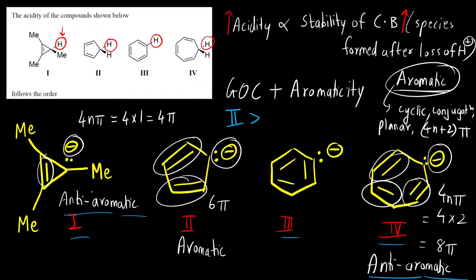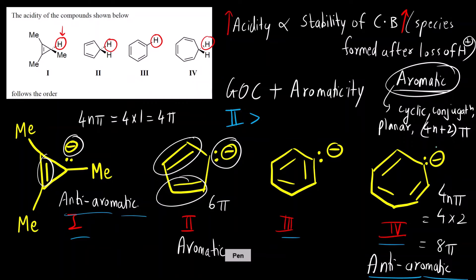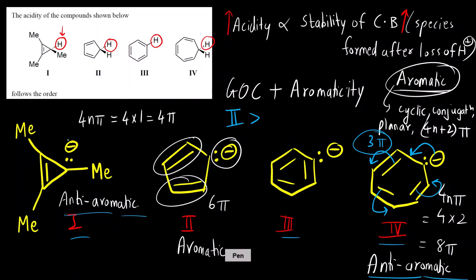Anti-aromatic ions are least stable. But we also have to consider stability in terms of conjugation. For compound 1, although it is anti-aromatic, the negative charge is involved in conjugation with 3 pi bonds. For compound 1, the negative charge is involved in conjugation with only 1 pi bond. Plus, this compound is already electron-rich, and the methyl group will also destabilize the conjugate base because it donates via the +I inductive effect — we are providing more electrons to an already electron-rich system. So compound 1 is going to be the least stable.